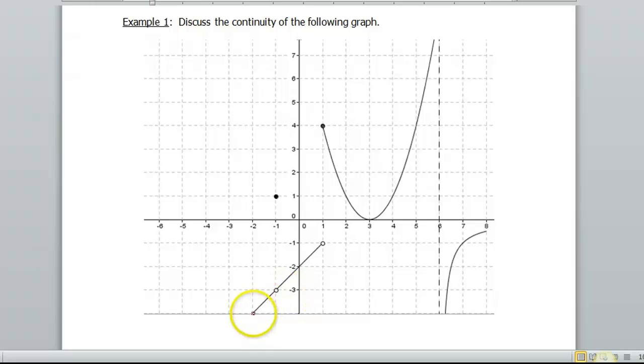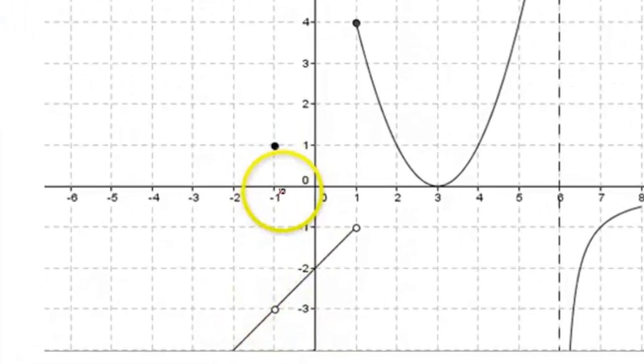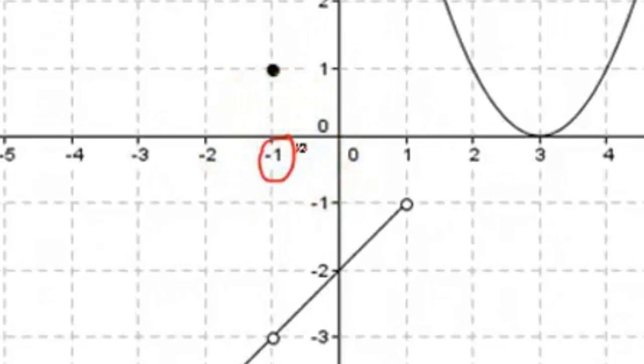The first place that I see an issue at is right here, at x equals negative 1. Because what do you notice is happening at x equals negative 1? Well, the function is defined because it's got a point up here. The limit is defined because as you approach negative 1 from the left and as you approach negative 1 from the right, it seems to have the same value. But are these two pieces the same? And the answer is no. So the function is not continuous at negative 1 because the function value does not equal the limit value.